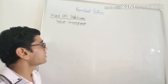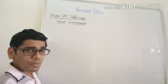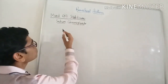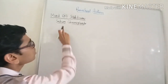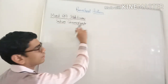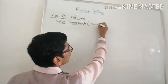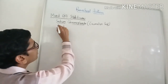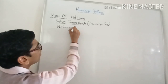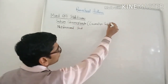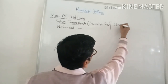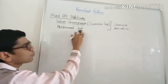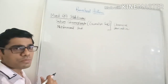Mast cell stabilizers stabilize the mast cells. First we will see the drugs, then their actions, doses, and uses. The first drug in this category is sodium cromoglycate, also called cromolyn sodium, and the second drug is nedocromil sodium. Both of these are chromone derivatives by their chemistry.